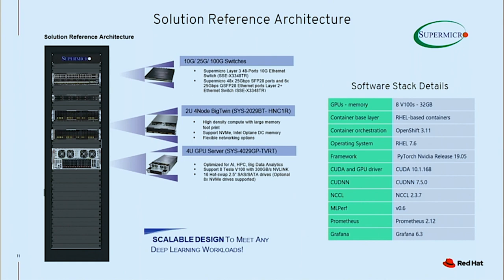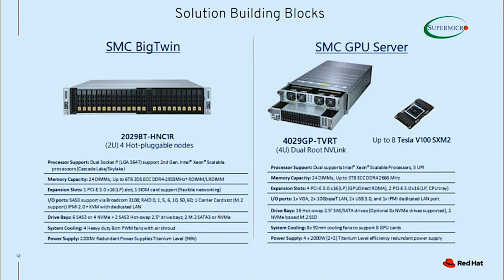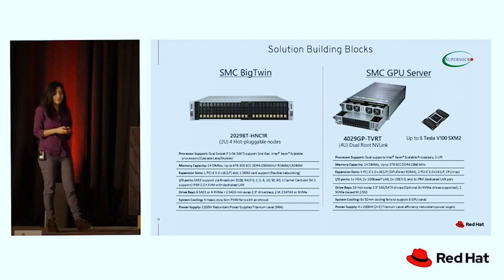For the software stack, we used RHEL 7.6 and OpenShift 3.11 with the appropriate CUDA versions. The OpenShift cluster building block is the Supermicro Big Twin, famous for its very dense parallel compute power and large memory footprint. For running the actual AI workloads, we used our Supermicro GPU server, which can operate up to eight Tesla V100 SXM2 GPUs — the actual GPUs we used for this benchmarking.